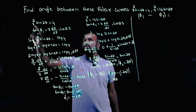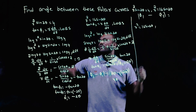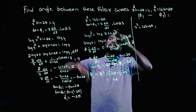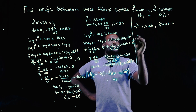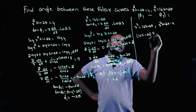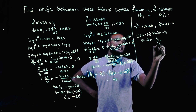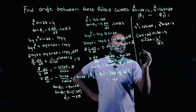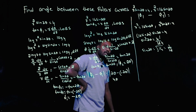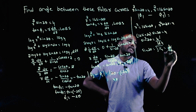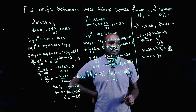To find θ, we use the curves at their intersection. From r² = 16·sin2θ and the first curve r²·sin2θ = 4, substituting r² = 16·sin2θ into the first equation gives 16·sin2θ·sin2θ = 4, so sin²2θ = 4/16 = 1/4. Taking the square root, sin2θ = 1/2, which corresponds to 30 degrees.